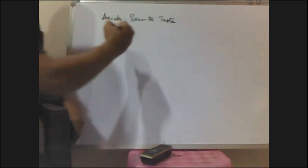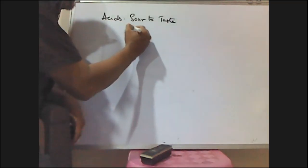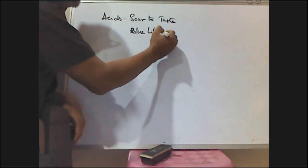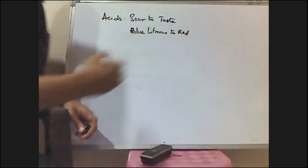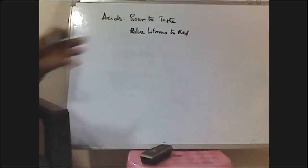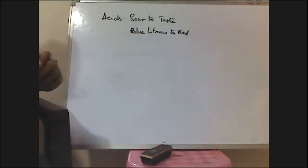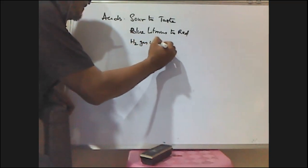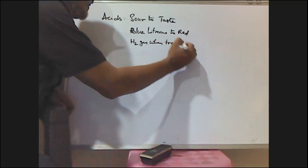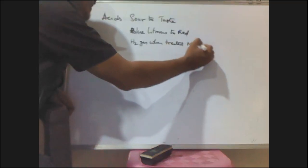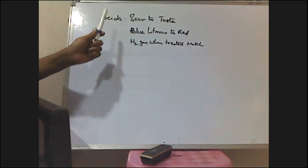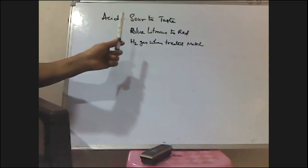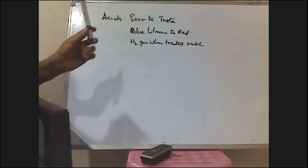Acids are sour to taste. They turn blue litmus to red color — if we dip a blue litmus paper in acid, it turns red. And they liberate hydrogen gas when treated with metals. These are some characteristics of acids: acids are sour to taste, they turn blue litmus to red, and they liberate hydrogen gas when treated with metals.